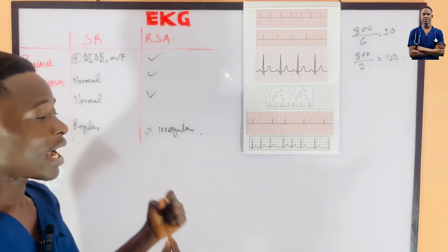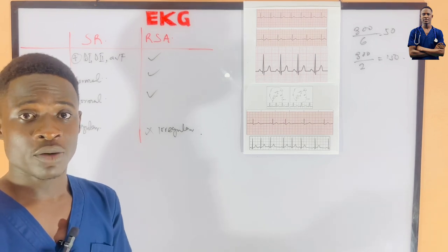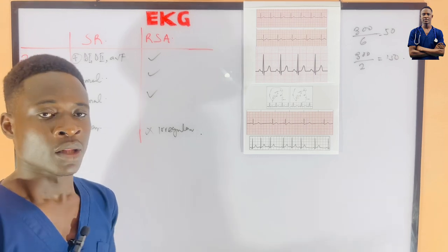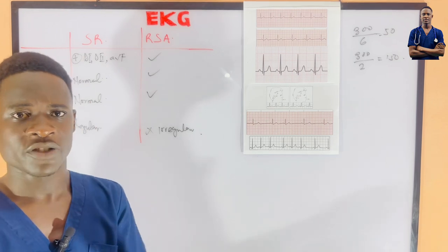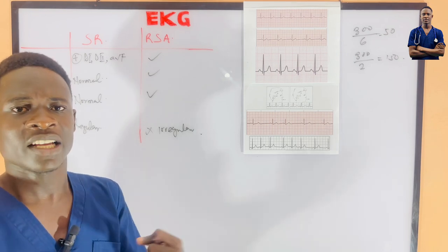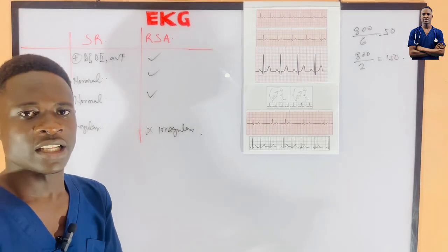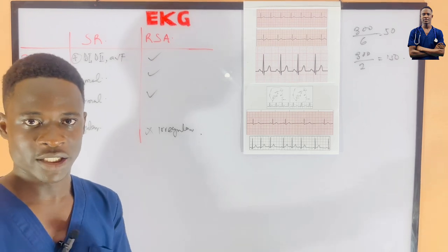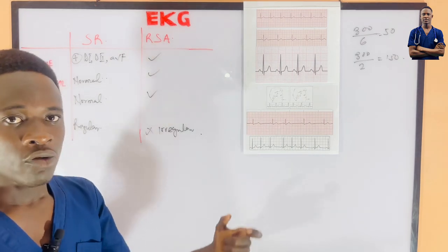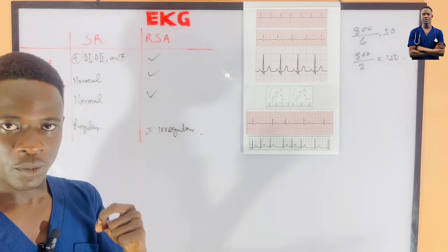Respiratory sinus arrhythmia happens when a person is undergoing breathing — inhalation and exhalation. During this process there is an interaction between the respiratory system and the cardiovascular system. This results in changes in intrathoracic pressure, which causes increments and decreases in the heart rate, giving the irregularity.